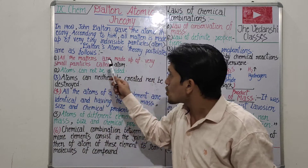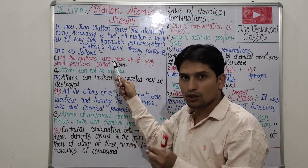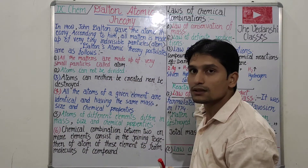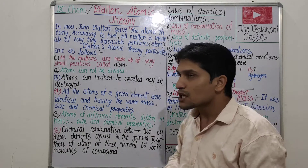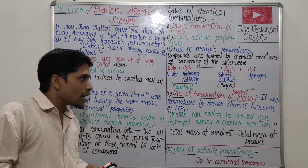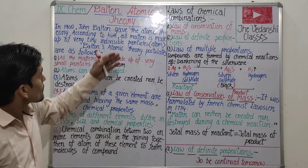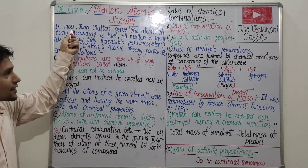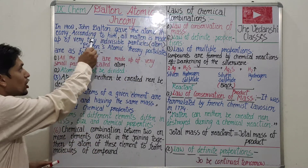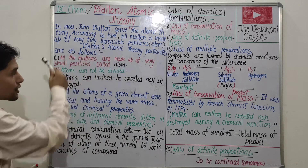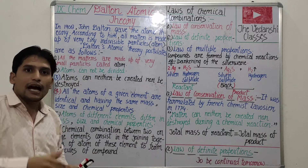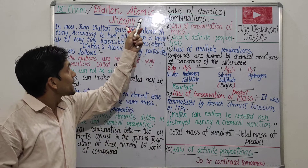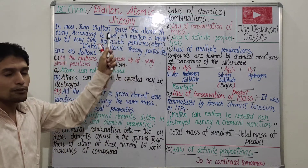Today we are going to discuss Dalton's Atomic Theory and the laws of chemical combinations. This topic is from the 4th chapter and this topic is from the 3rd chapter. Without wasting time — Dalton's Atomic Theory. In 1808, John Dalton gave the atomic theory. After Maharshi Kanad, Dalton gave his atomic theory.